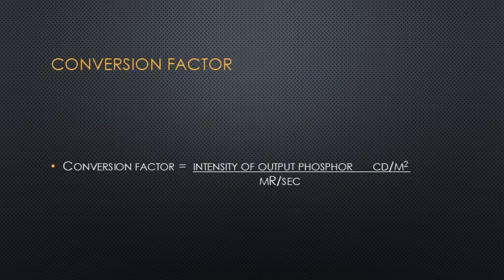The output phosphor is measured in candela per meter squared, which is the measurement of luminous intensity. The higher the conversion factor, the more efficient the image intensifier tube is. Conversion factor is the recommended unit of measure by the International Commission on Radiation Units and Measurements — this is how you quantify image intensifier brightness gain. Typical values are about 80 to 250 candela per meter squared per milli-Roentgen per second, or we can think of it as 8,000 to 25,000 times.